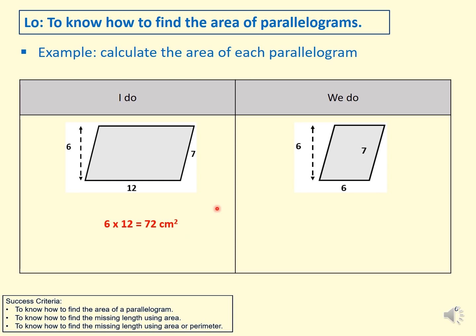Pause the video and have a go with this question. In this one, the perpendicular height is 6 and the base is 6 as well, so I completely ignore 7 — that's the diagonal. I do 6 times 6, which is 36, and the unit is centimetres squared for area. Well done if you managed to do it right.